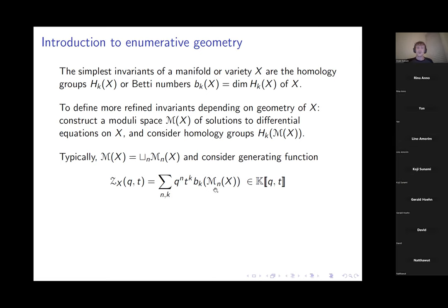You can sum all of the possible connected components and all possible Betti numbers — sometimes with some more subtle filtration on the cohomology — and think of this whole polynomial as an invariant. This generating function Z_X is then some kind of invariant of X.